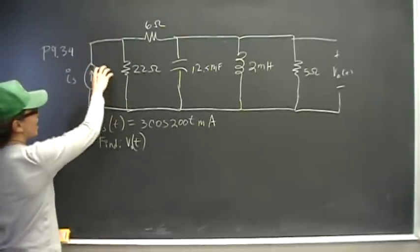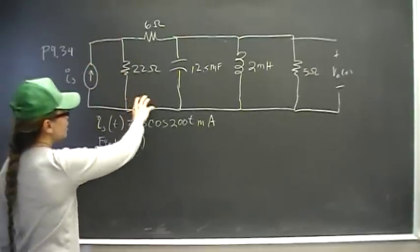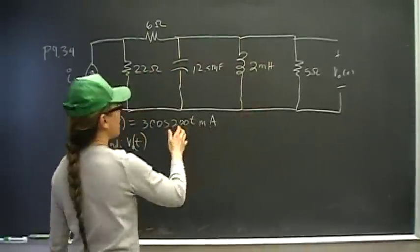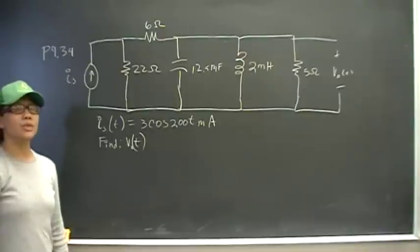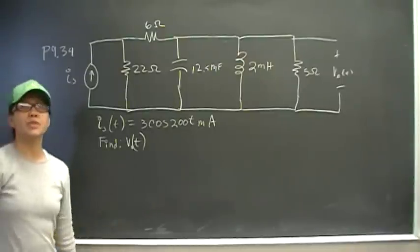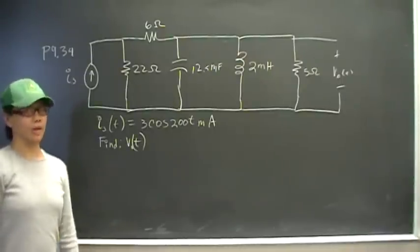And once I do that, there's all this junk going on here. I want to simplify my circuit to one equivalent impedance. And once I do that, this circuit will reduce to a voltage divider circuit.